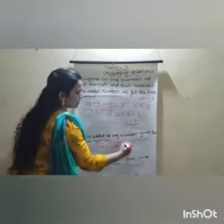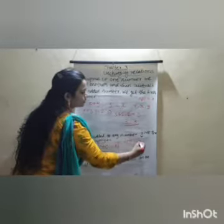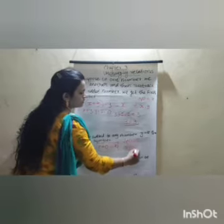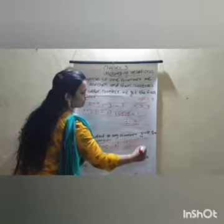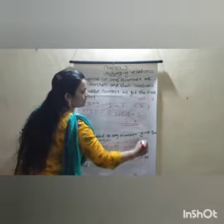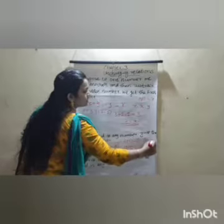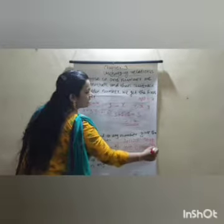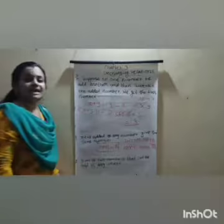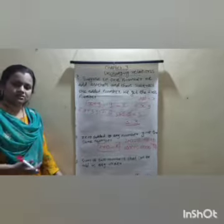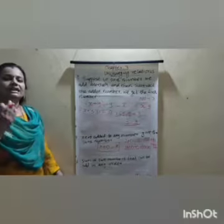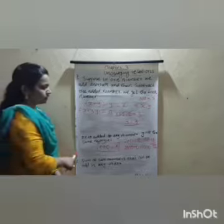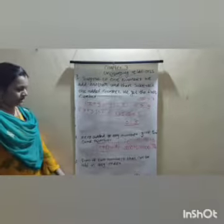Then prove this: 2 plus 0 equals 2. 1000 plus 0 equals 1000. 150 plus 0 equals 150. We always get the same number. Any number added to 0 gives the same number. The equation is proved.